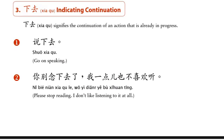Next we have 下去. 下 means down and 去 means go, so 下去 literally means to go from a higher place to a lower place. If you're at the top of the stairs and you want someone to go down: 下去. 我下去 — I'm going down. But 下去 can also mean the continuation of an action that is in progress.